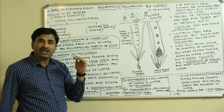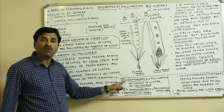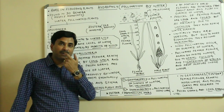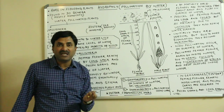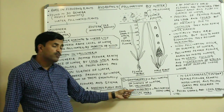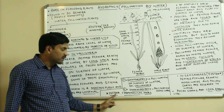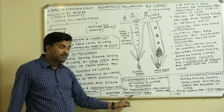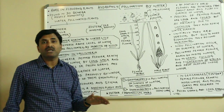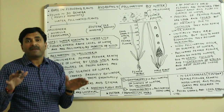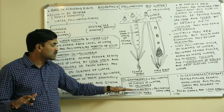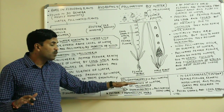When pollination occurs on the surface of the water, it is called epi-hydrophily. But in plants like Zostera, Ceratophyllum, Najas, and Hydrilla, pollination occurs inside the water, and such pollination is called hypo-hydrophily.